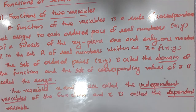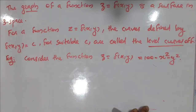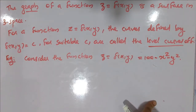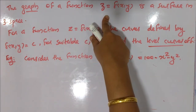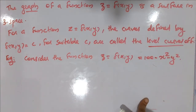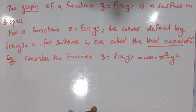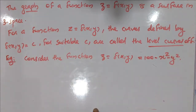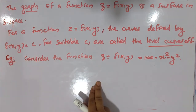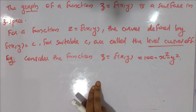The graph of the function z equal to f of xy is a surface in three-dimensional space. The two-variable function graph exists in 3D space as one surface. The curves defined by f of xy equal to c for suitable c are called the level curves of f.